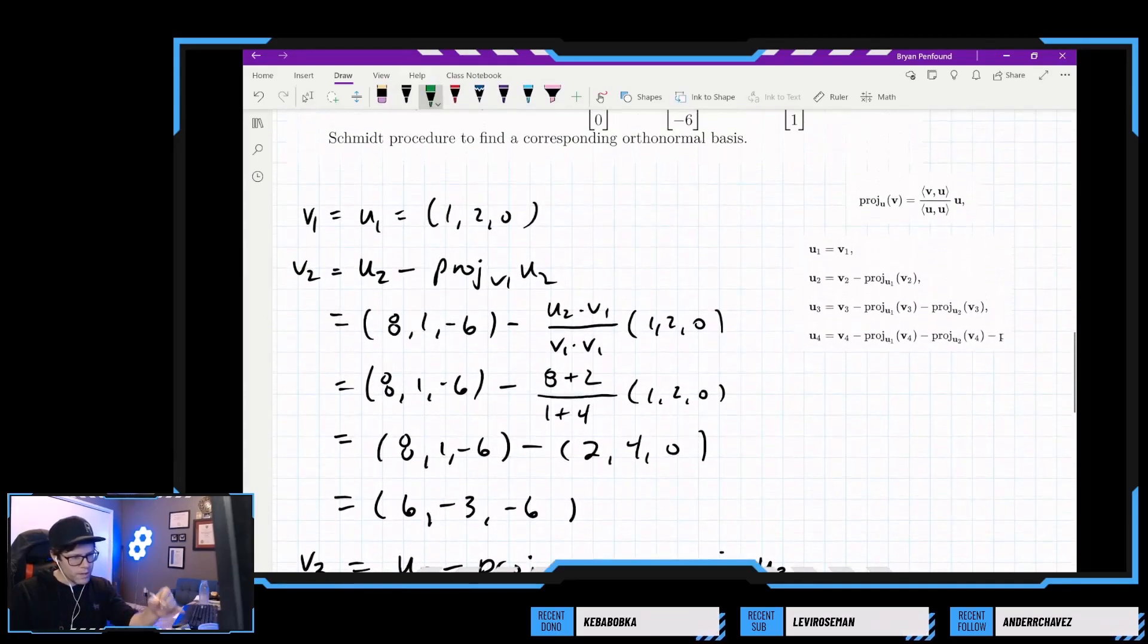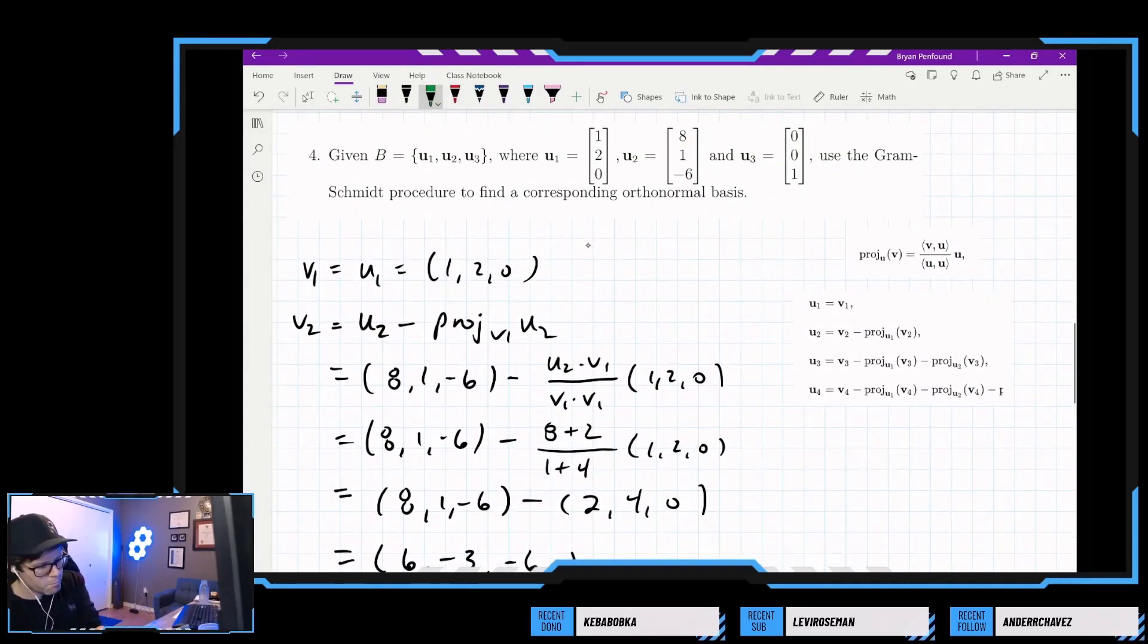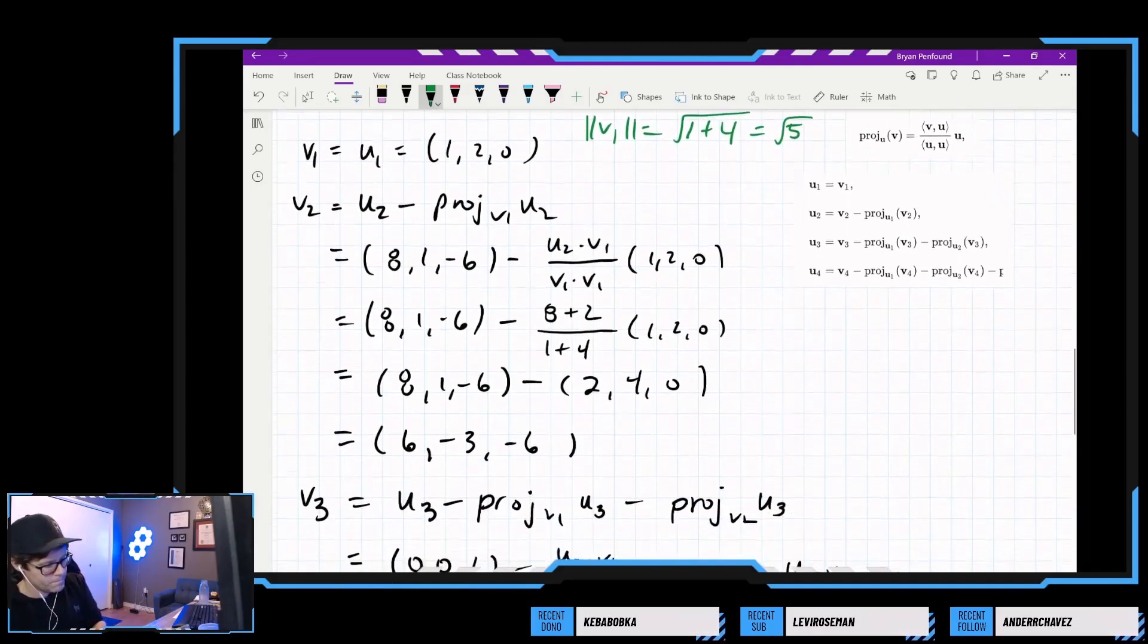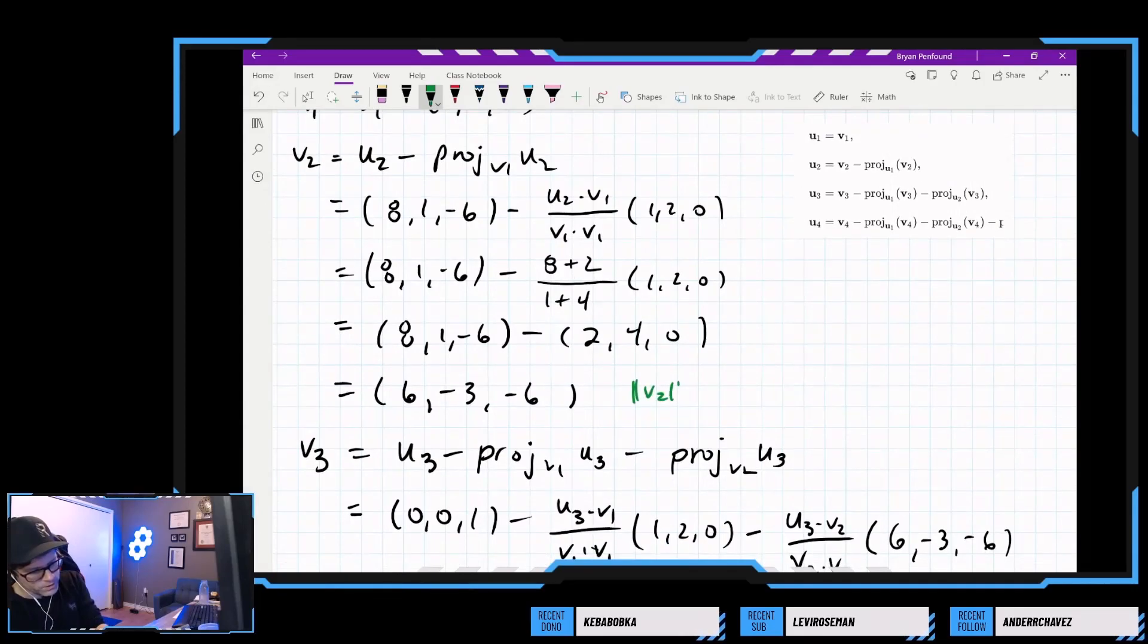So let's go back and calculate the magnitude of all of our vectors so that we can get the orthonormal basis that we need. So right now we do have the orthogonal basis. So here this magnitude is 1 plus 4 plus 0 under the root. So this is root 5 for our second vector. For vector v2, we have 81. So 36 plus 9 plus 36. So that magnitude is 9.